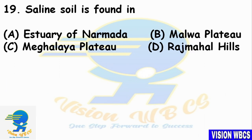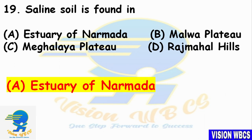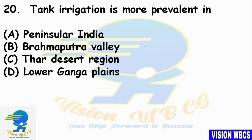Question 19: Saline Soil is found in? Option A — Estuary of Narmada. Option B — Malwa Plateau. Option C — Meghalaya Plateau. Option D — Rajmahal Hills. The right answer is Option A: Estuary of Narmada.